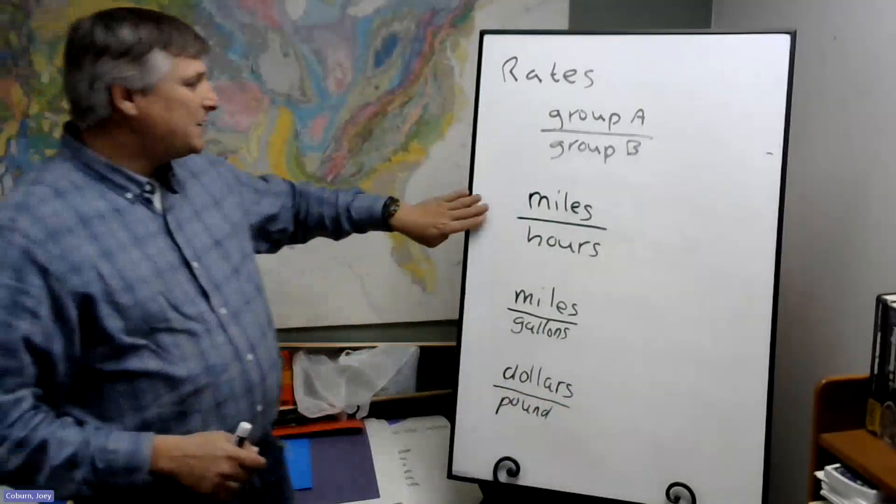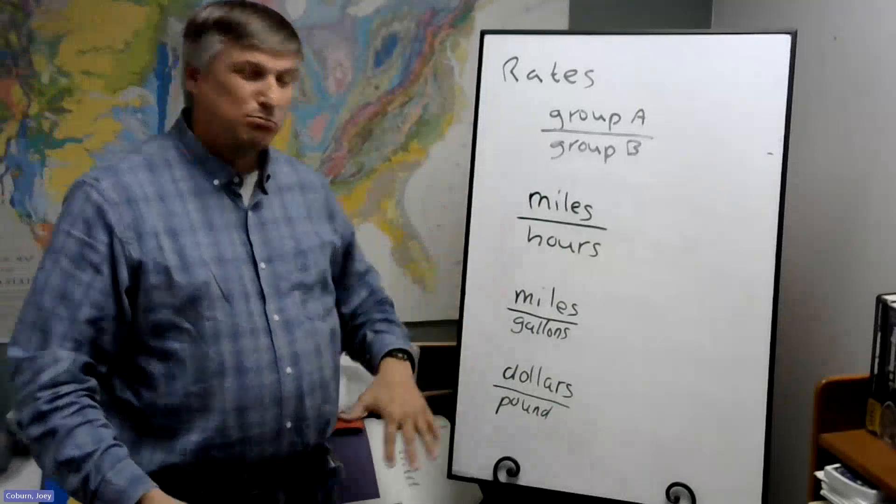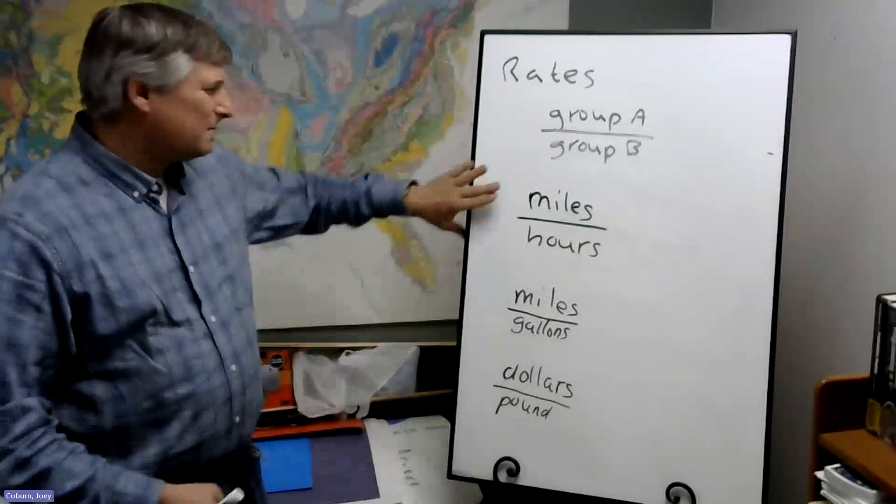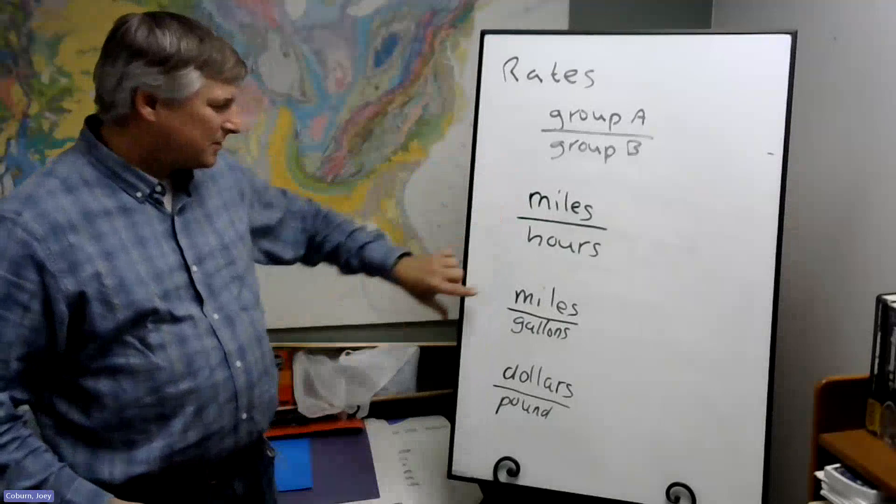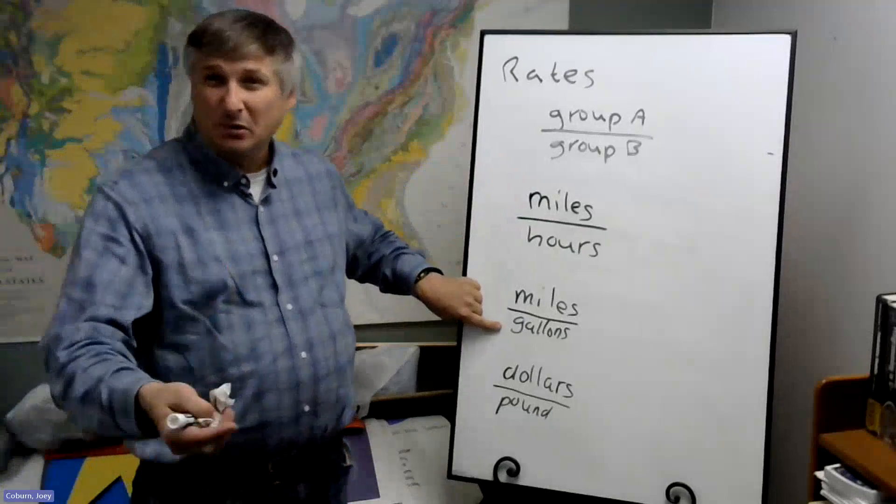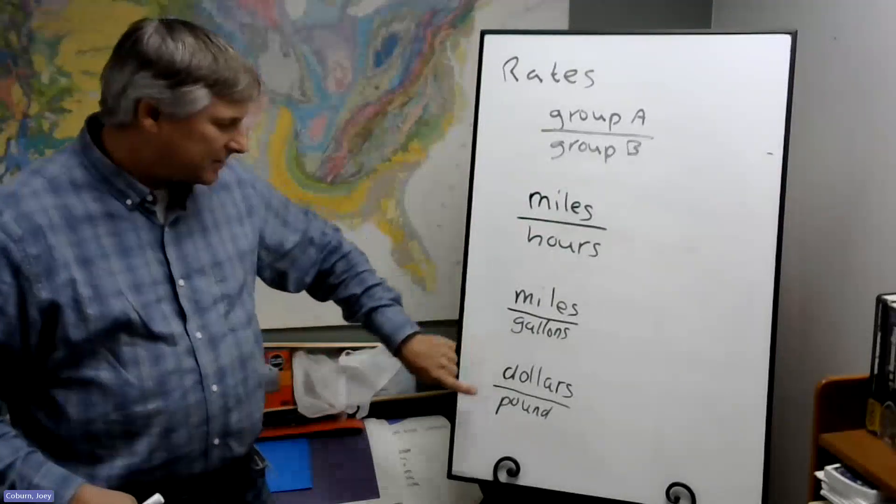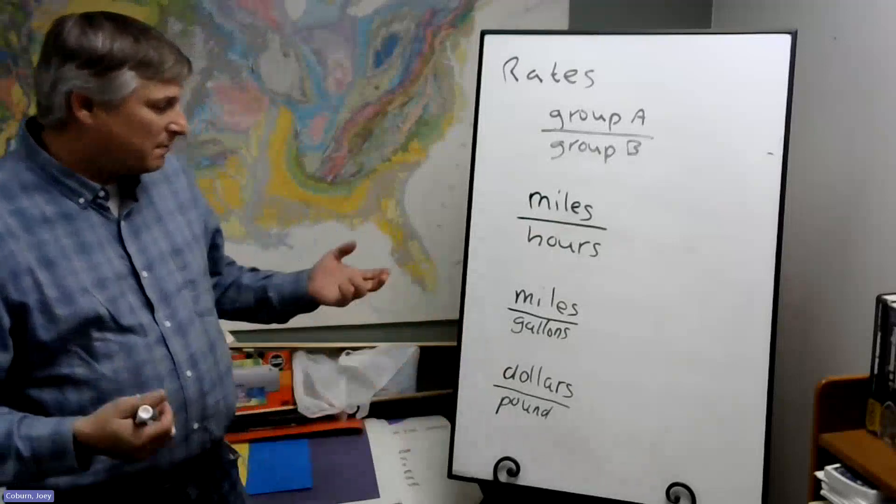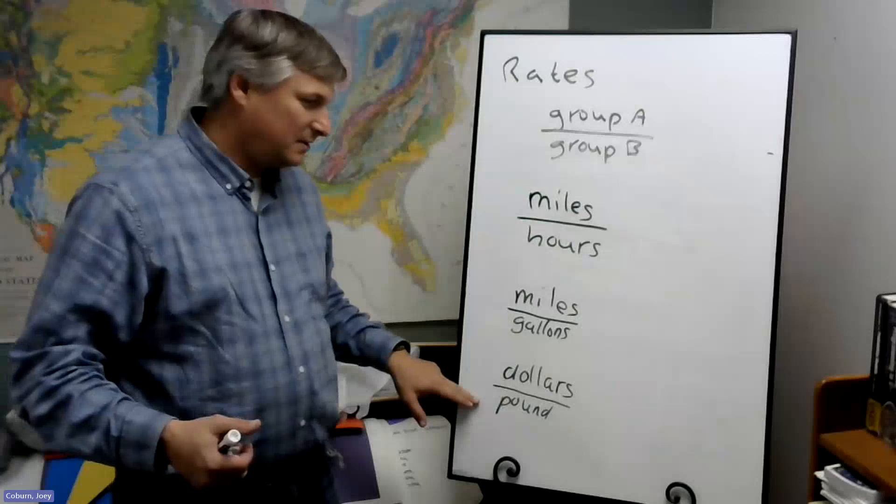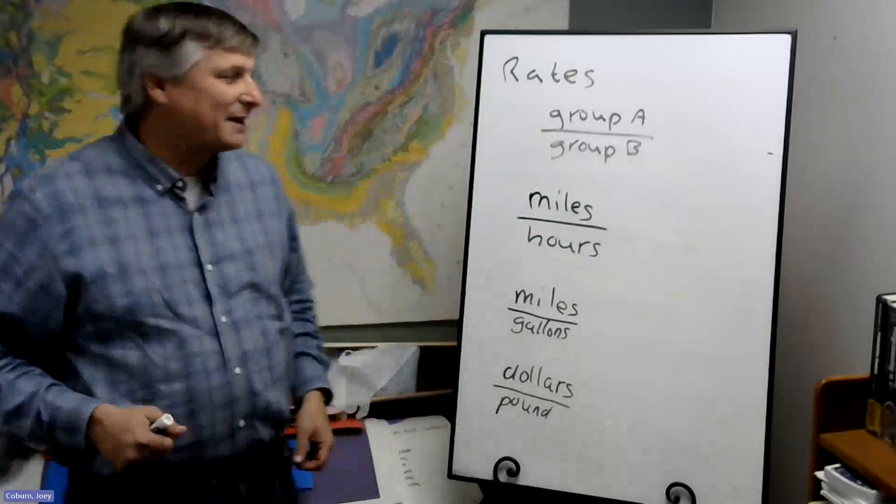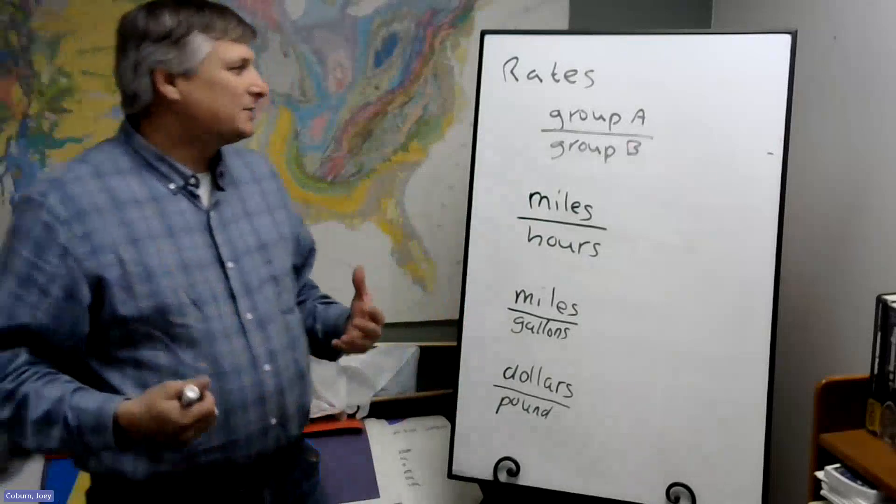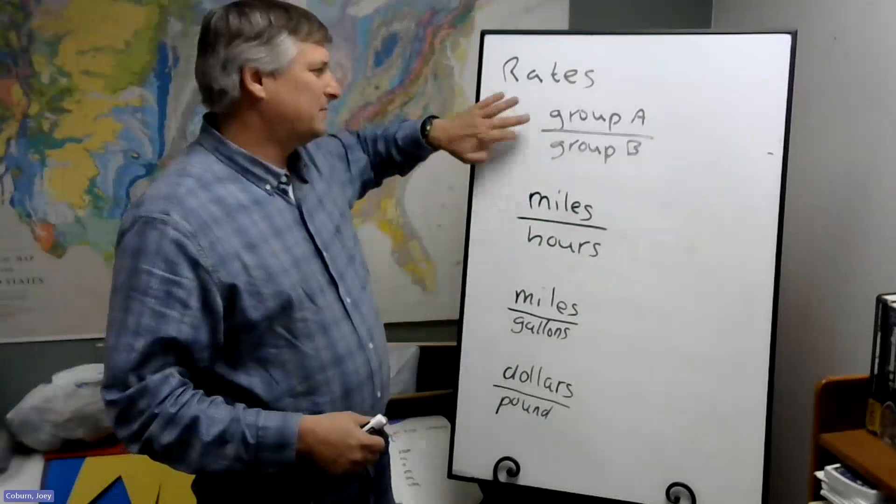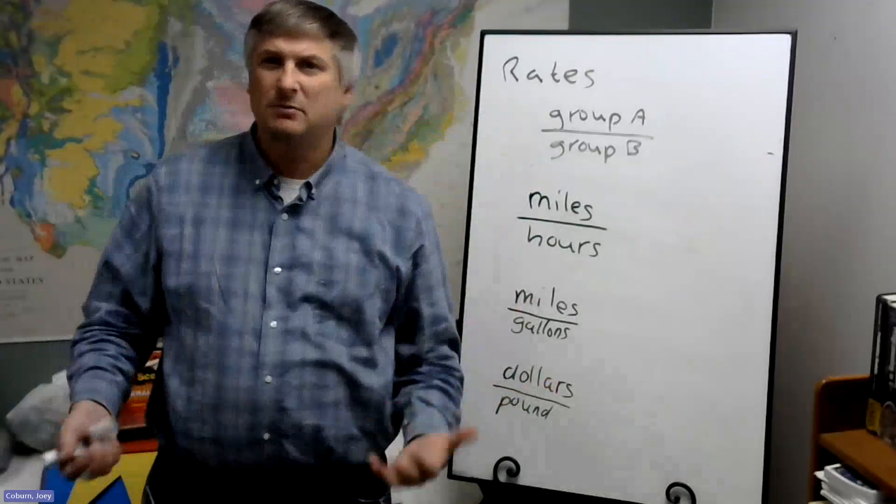So these are all rates. They compare completely different things. Distance and time. Here's distance and gallons of petroleum. Here's money. And here's pounds of something. Maybe pounds of say pistachio, something like that. So with rates, we just have some group, some number of a group, compared to another group.